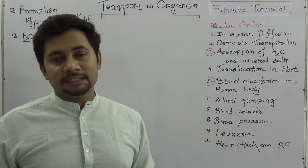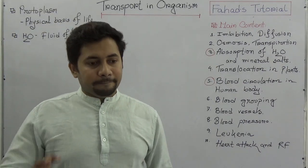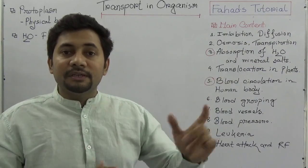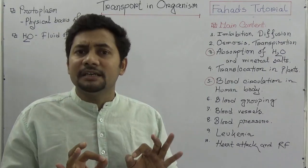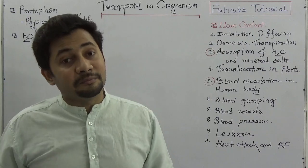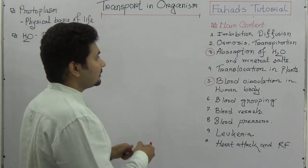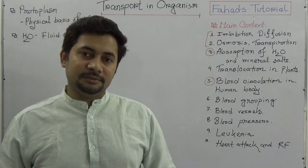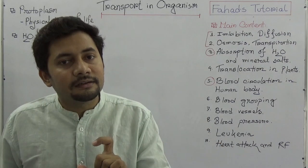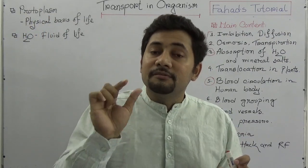Circulation-related diseases like heart attack, rheumatic fever, and leukemia are also discussed. So altogether, there are 10 to 12 main contents in this chapter covering how transport works in plants and in animals, especially in humans — where the heart pumps blood continuously. In this particular video, I am going to explain the first three topics: imbibition, diffusion, and osmosis. In the next video, I will cover transpiration and then the absorption of water and mineral salts.